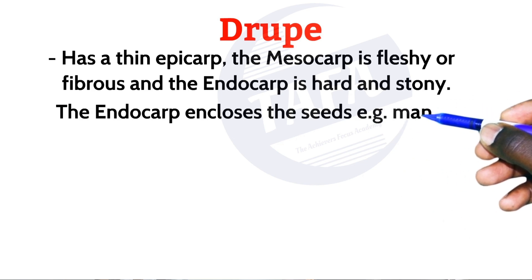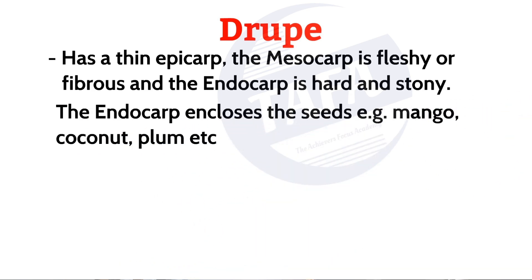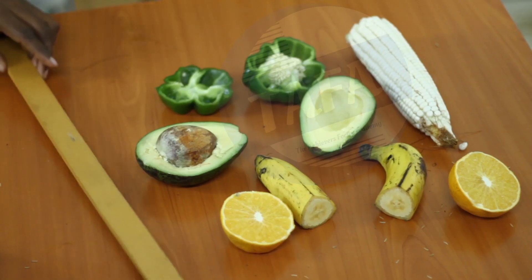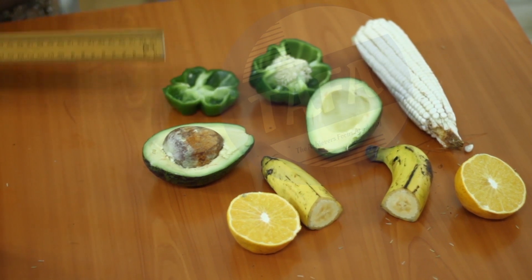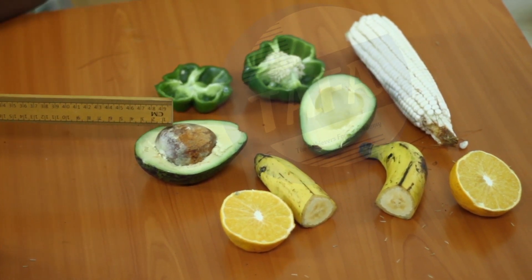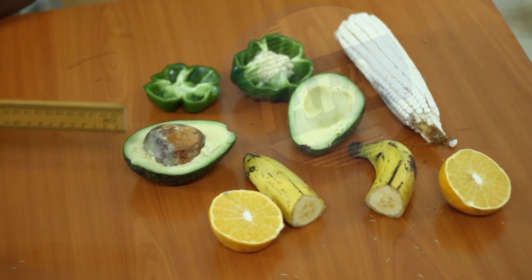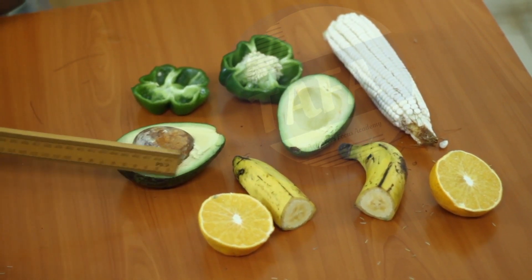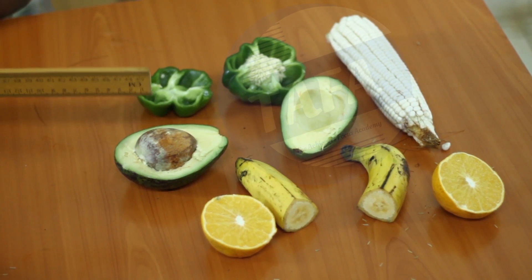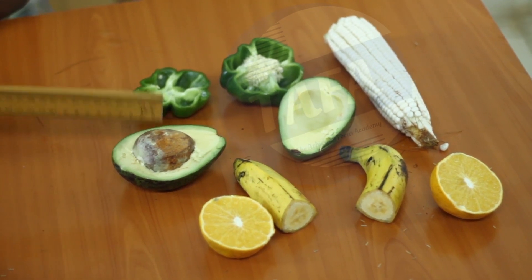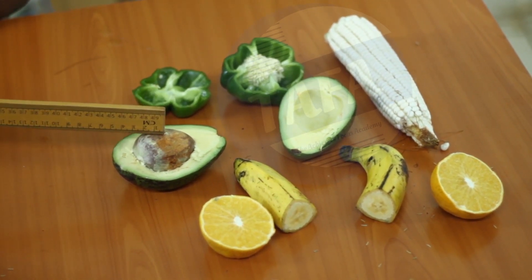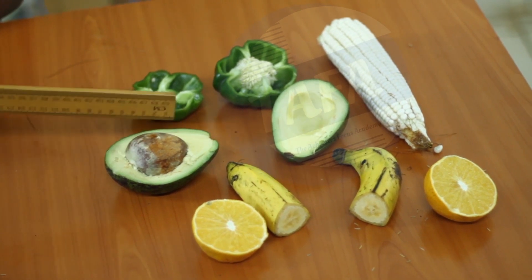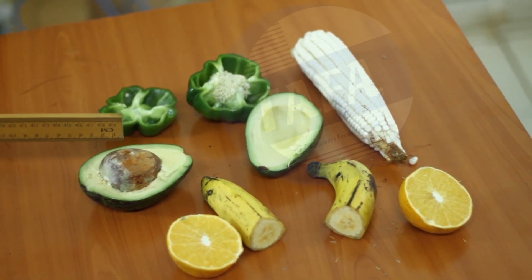The endocarp of the drupe encloses the seeds. Examples include mango, avocado, coconut, and plum. This illustrates an example of a drupe: the epicarp is very thin, the mesocarp is fleshy, and the endocarp is made up of a stony structure which, if broken into, will reveal the seed.